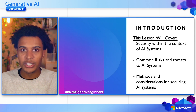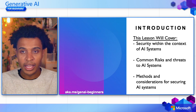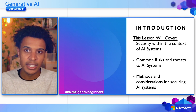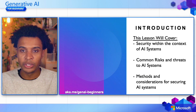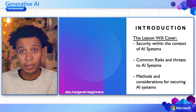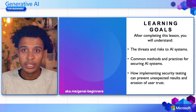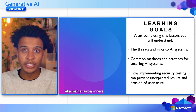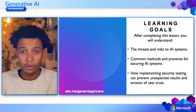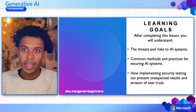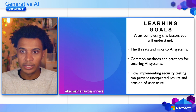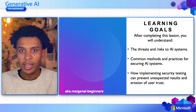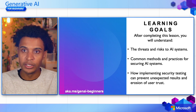This lesson is going to cover security within the context of AI systems, what are the common risks and threats when building generative AI applications, and methods and considerations for securing these systems. Our learning goals: we'll examine threats and risks against AI systems, look at methods and practices to secure against those risks, and how to implement security testing to prevent unexpected results and maintain user trust.